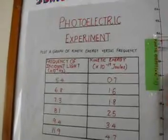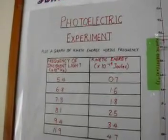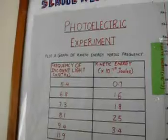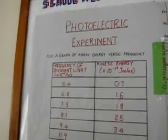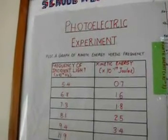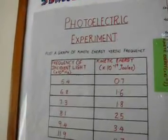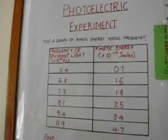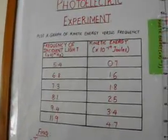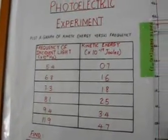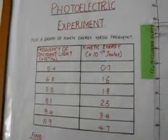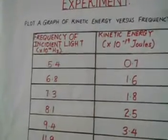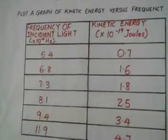An experiment on the photoelectric effect was carried out to investigate the maximum kinetic energy of electrons emitted from a metal surface when light of various frequencies is shone on that metal surface. Here are the results: the frequency of the incident light and the kinetic energy of the emitted electrons.